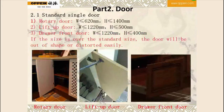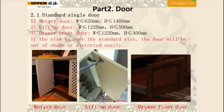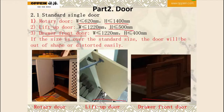Part 2, the available size of door. For standard single door, we have the rotary door, lift-up door, and drawer front door. For rotary door, the width must be less than 620 mm and the height must be less than 1,400 mm. For lift-up door, the width must be less than 1,220 mm and the height must be less than 500 mm. For drawer front door, the width must be less than 1,220 mm and the height must be less than 400 mm. Because if the size exceeds the standard size, the door will be out of shape or distorted.